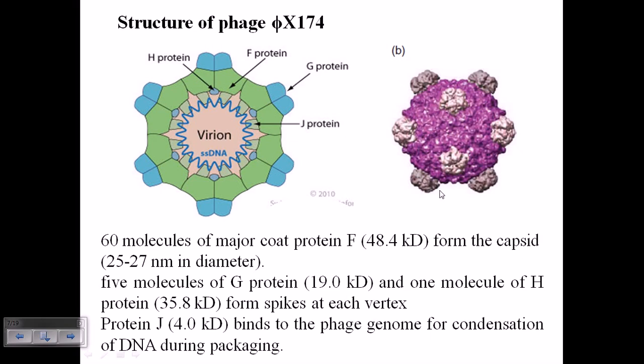That's the actual first goal for any virus or bacteriophage—to enter inside the host. Protein J binds to the phage genome for condensation of DNA during packaging. Protein J is only required when DNA is being packaged and needs to be condensed. As you can see in this picture, the DNA is wavy, creating compactness inside.